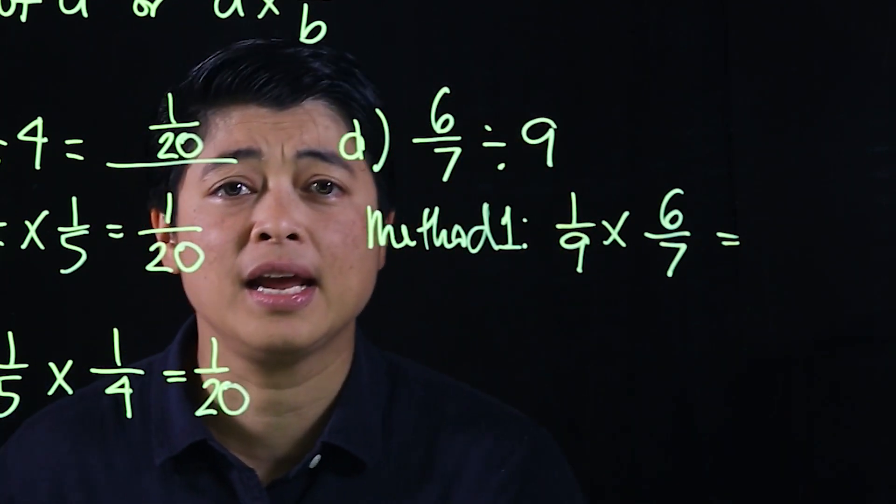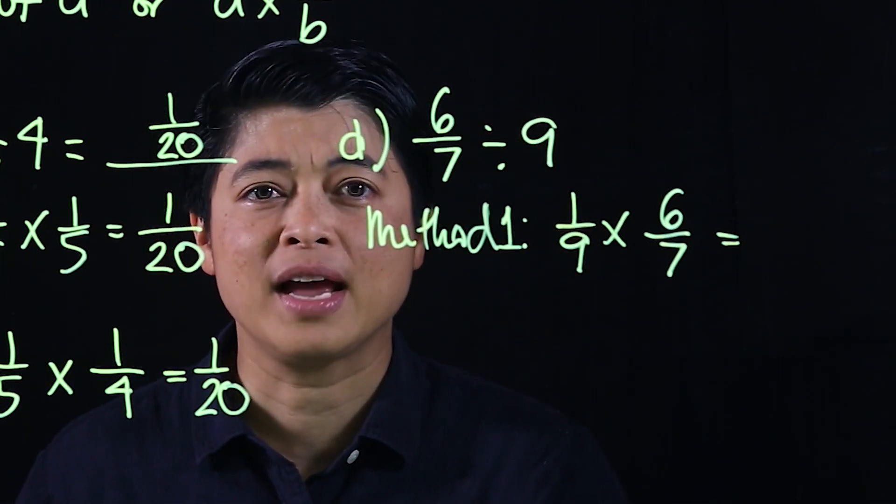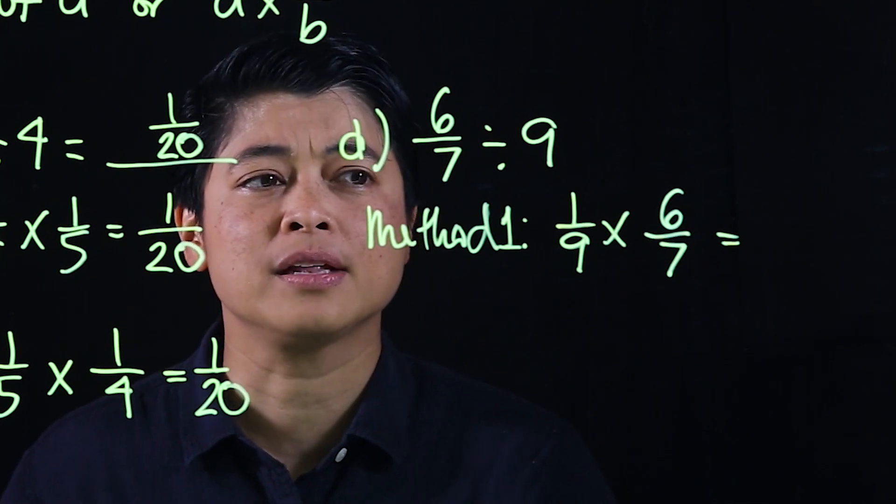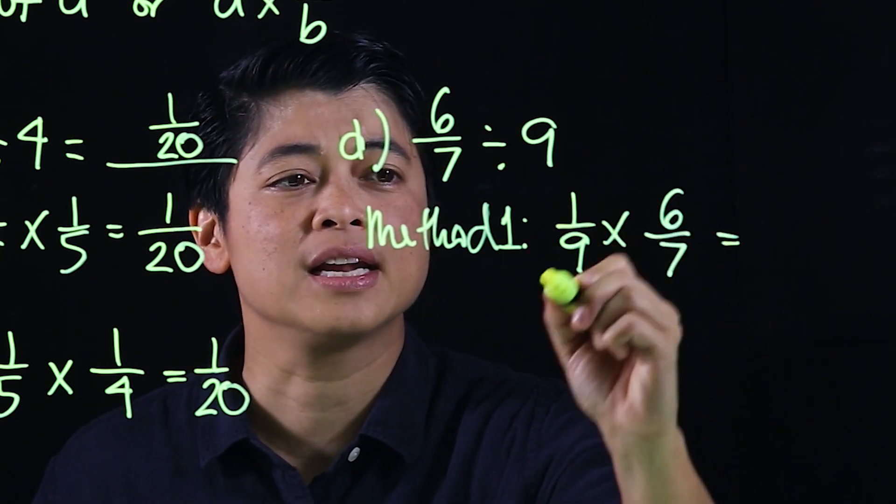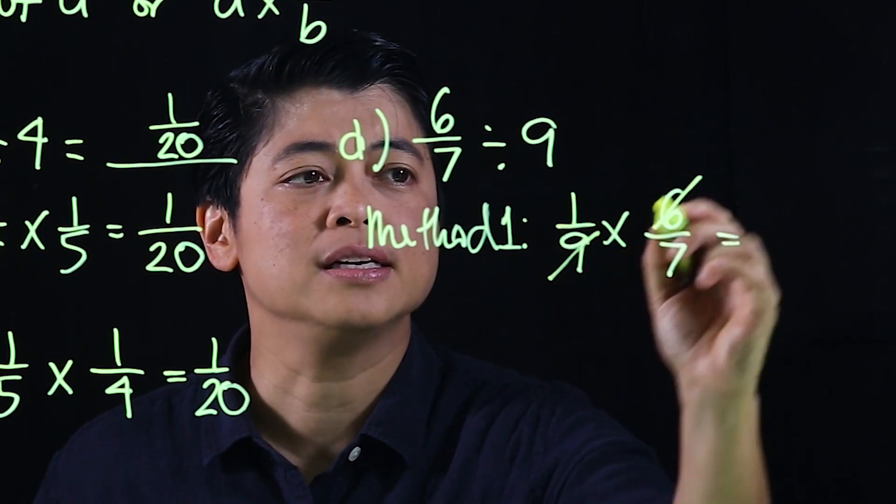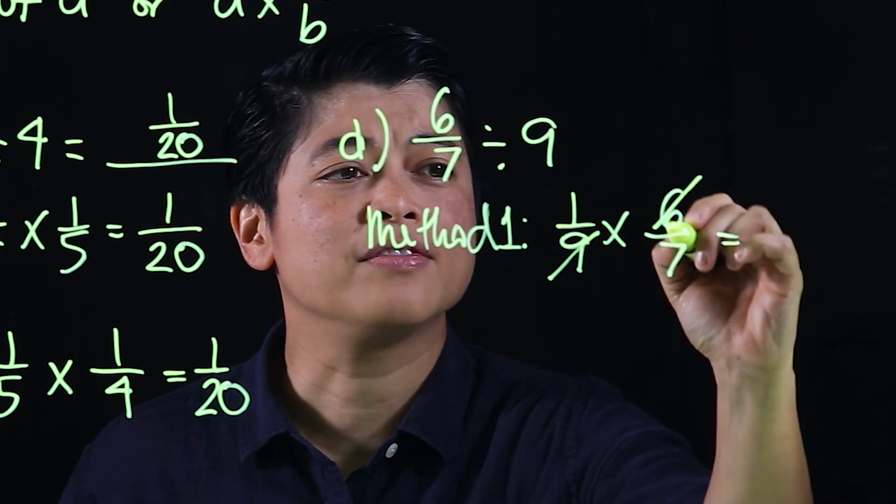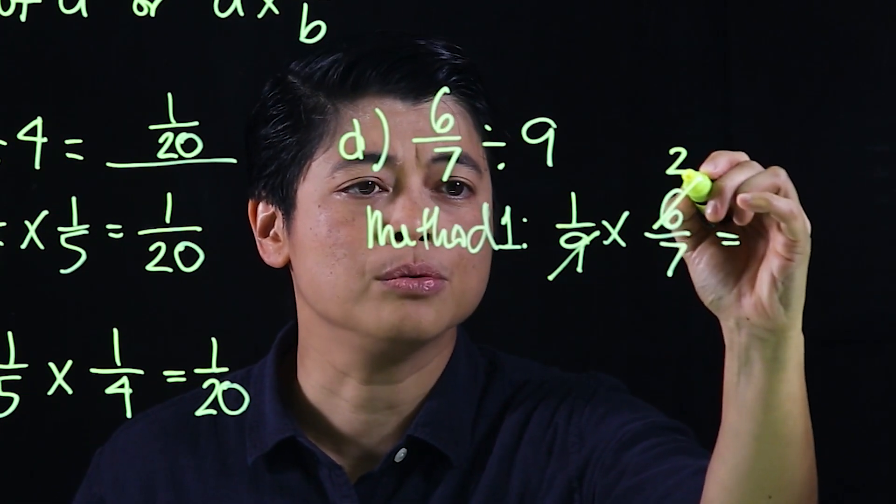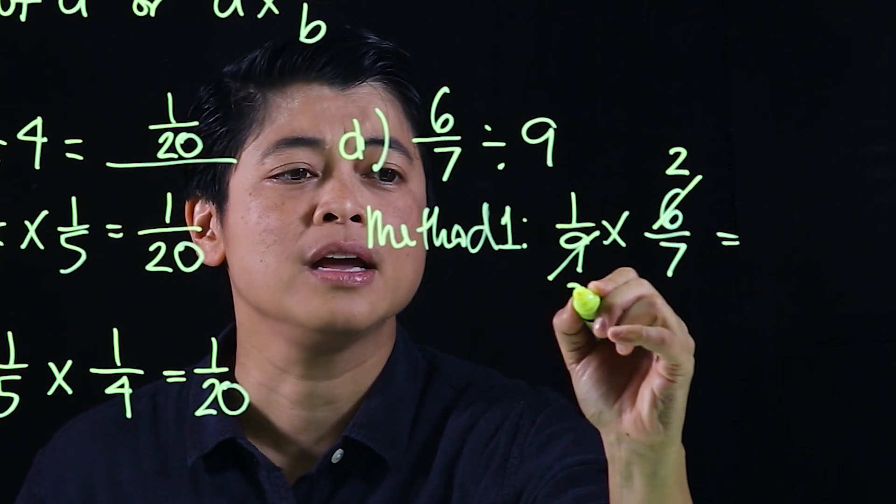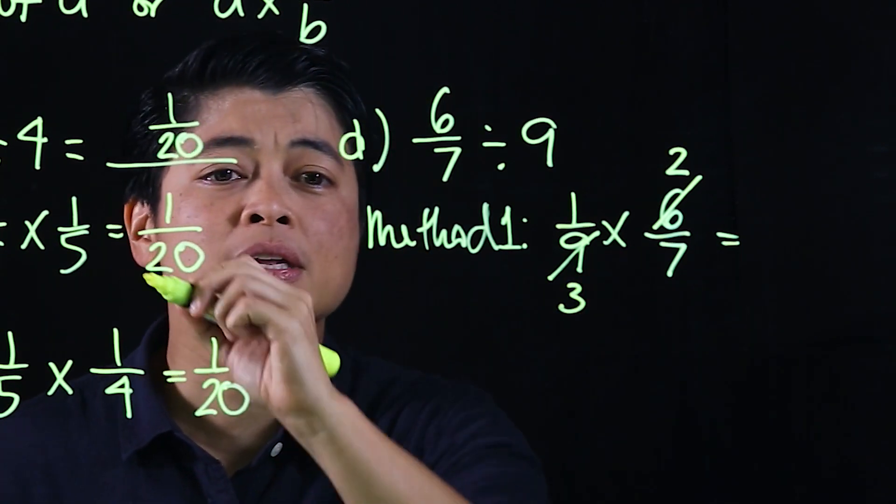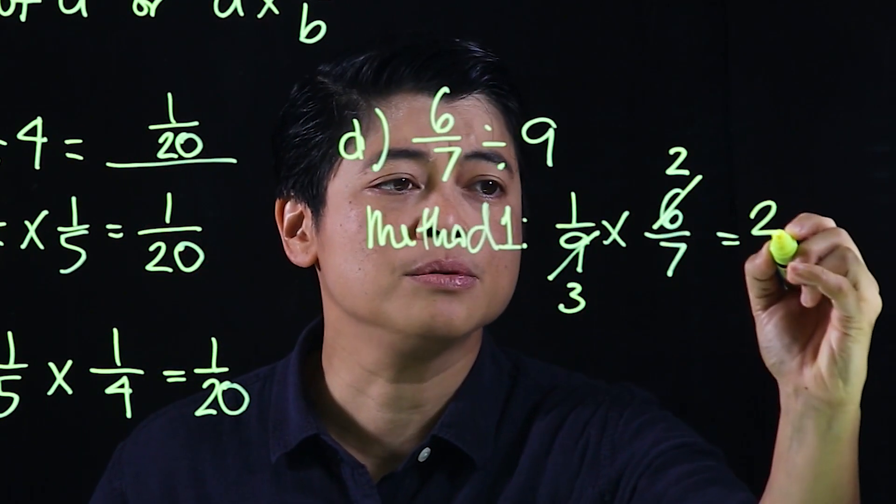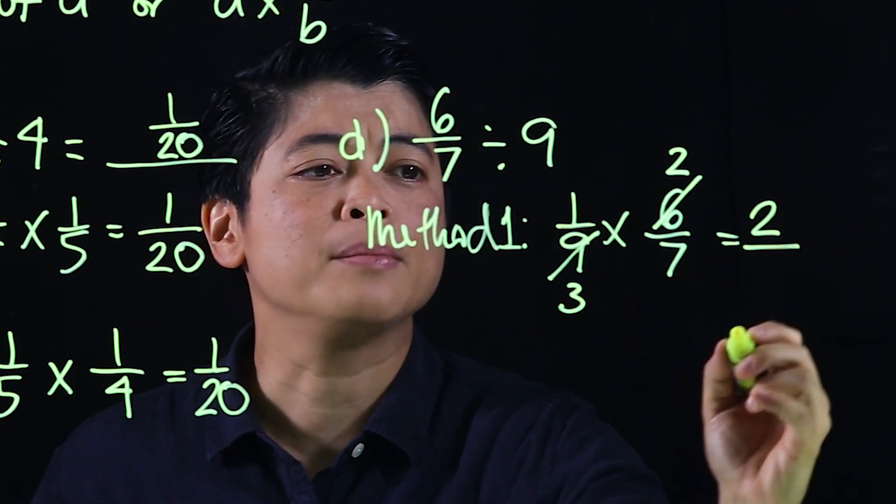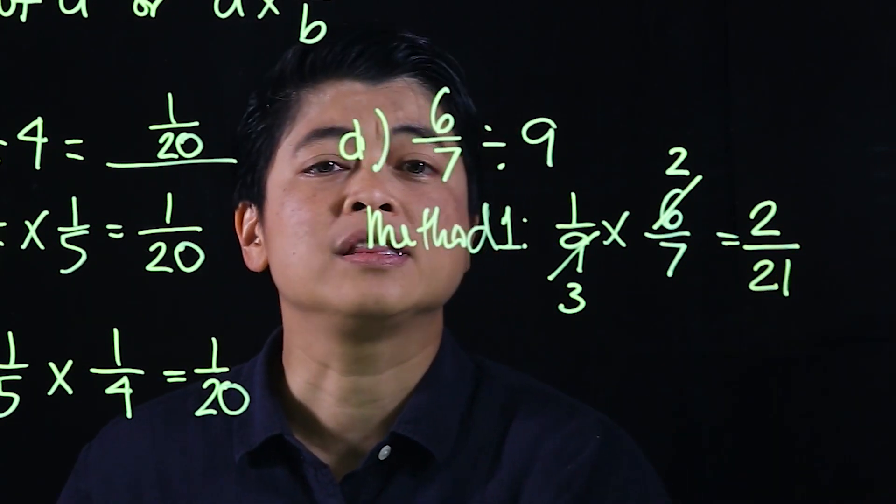Anything in the numerator should be able to cancel with anything on the denominator. If I look, there's a 6 and a 9, those cancel. That would mean I can divide by 3: 2, and divide by 3: 3. Then we multiply across. That's 1 times 2 is 2 over 3 times 7 is 21.